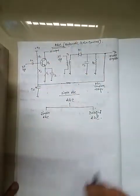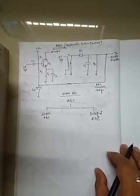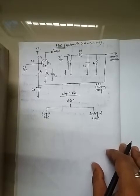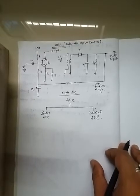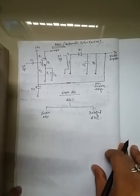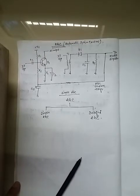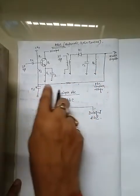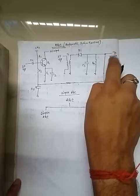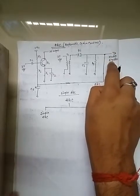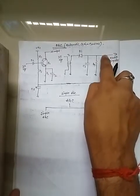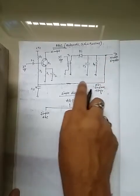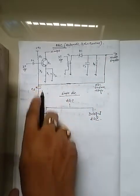The circuit diagram of the Simple AGC circuit is shown here. Actually, the AGC circuit is a peak detector, and here a feedback path is also available to maintain the constant output.